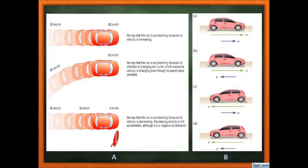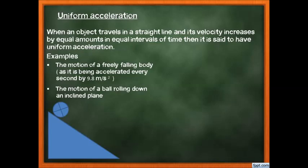Uniform acceleration means acceleration is happening, but at a constant rate. For example, if we measure acceleration in fixed time intervals of 15 minutes and find it is 2 m/s² each time — first interval 2 m/s², second interval 2 m/s², third interval 2 m/s² — the speed is increasing by equal amounts in equal time intervals, so it is uniform acceleration.